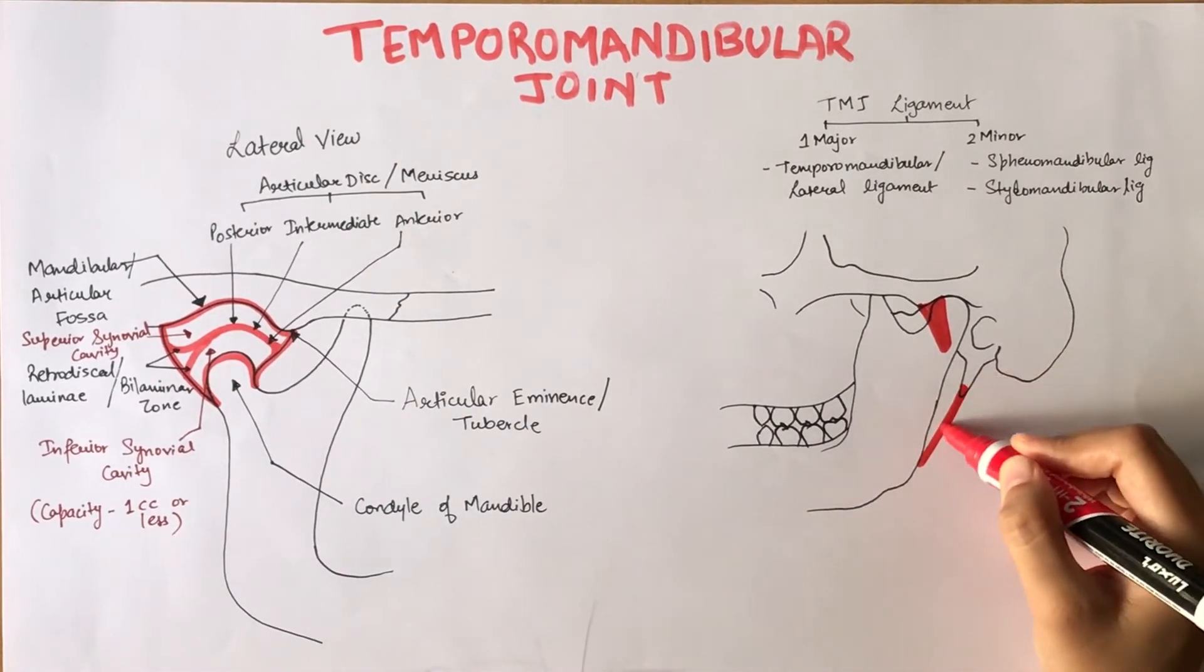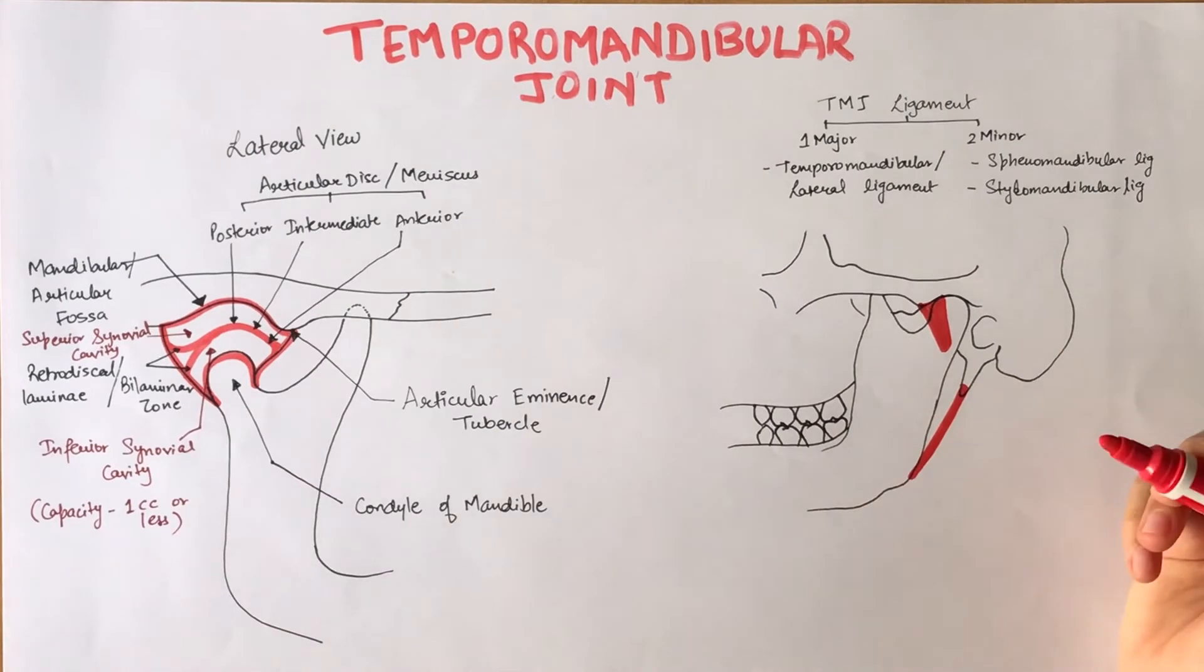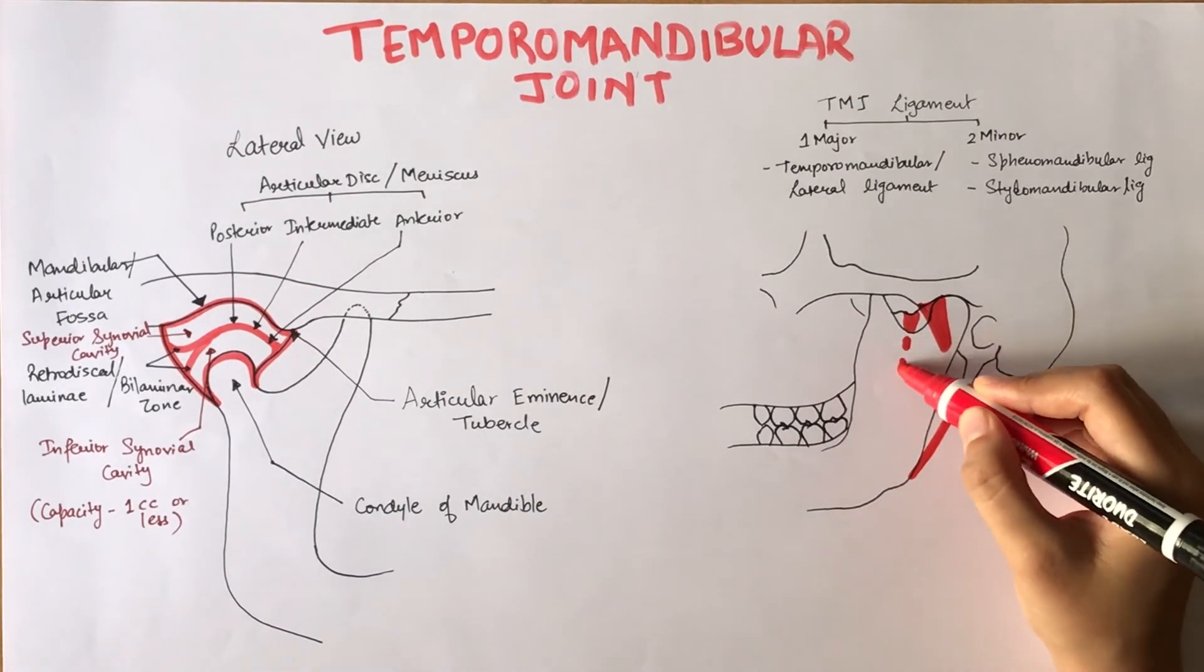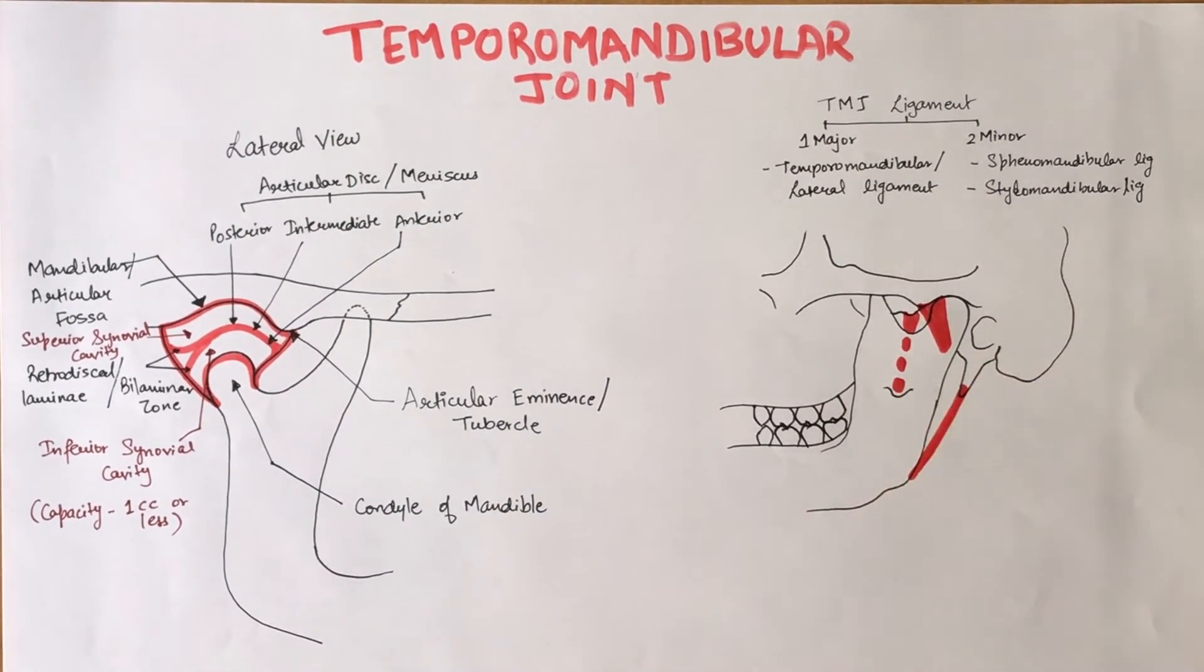The stylomandibular ligament runs from the styloid process to the angle of the mandible. The sphenomandibular ligament runs from the spine of the sphenoid bone to the lingula of the mandible.